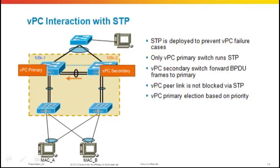Let's talk about VPC interaction with spanning tree. Spanning tree protocol is deployed to prevent VPC failure cases. Only the VPC primary switch will run spanning tree protocol. The secondary VPC member — 5K2 — will forward BPDU frames to the primary. The VPC peer link is not blocked via spanning tree. VPC primary election is based on priority, so in this example 5K1 on the left is the primary and 5K2 on the right is the secondary.